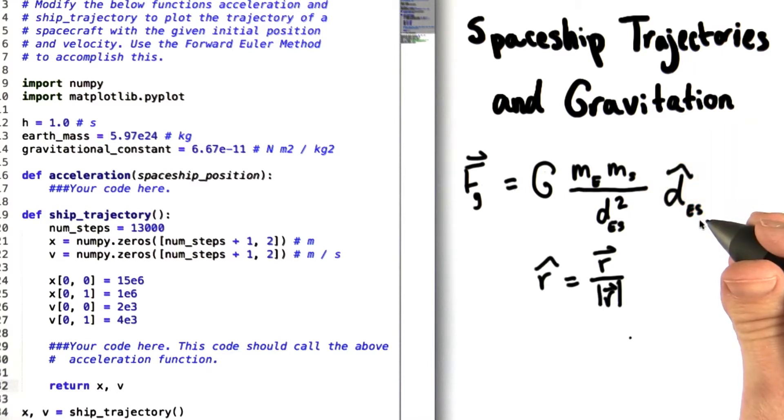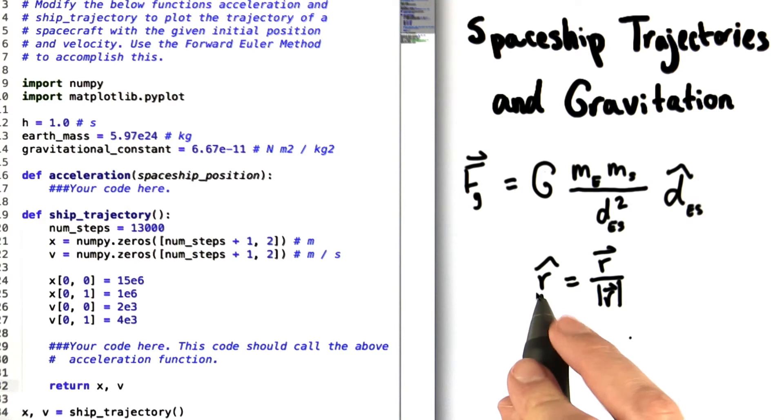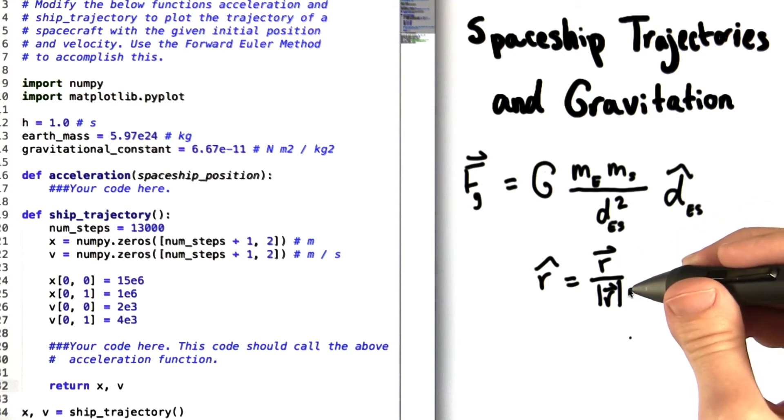Now this d with a hat over it represents a unit vector. Any given vector has a unit vector associated with it. This unit vector, denoted by the hat over it, is equal to the original vector divided by that vector's magnitude.